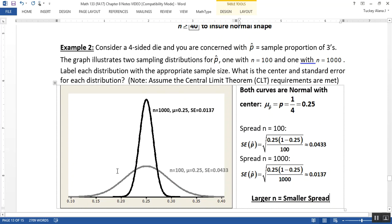Alright, so the key to this is they have the same distribution center and the same shape. They're both normal. And they both have that same center at 0.25, which is our mu sub P-hat, which is equal to P, which is one-quarter.